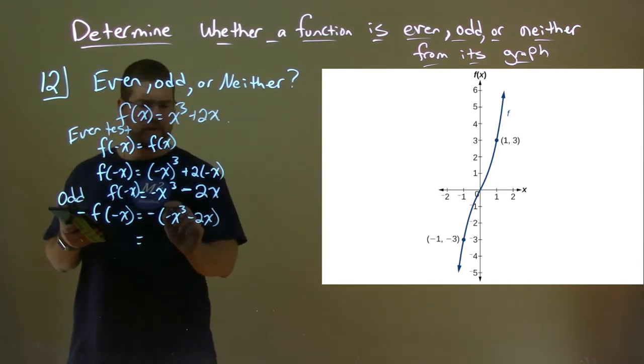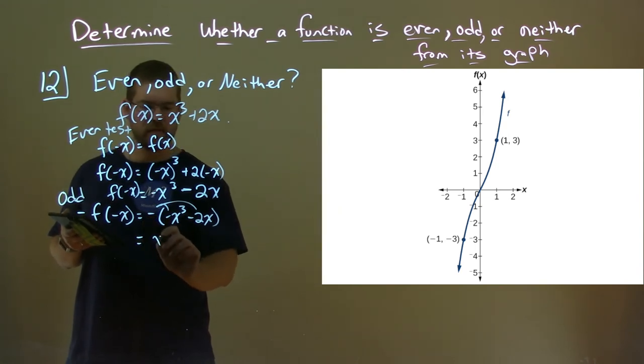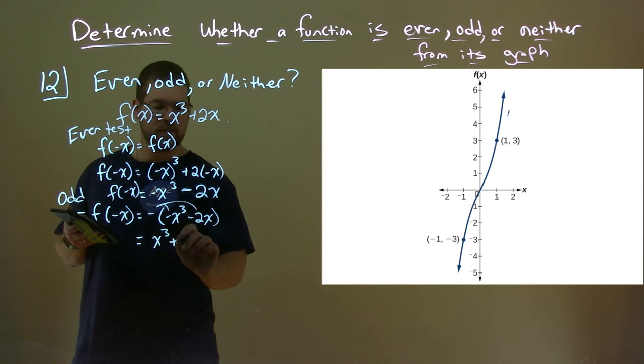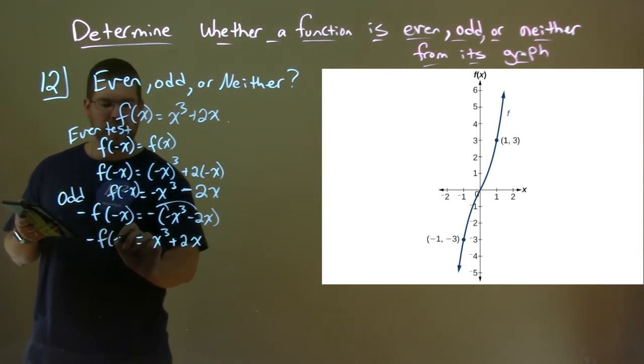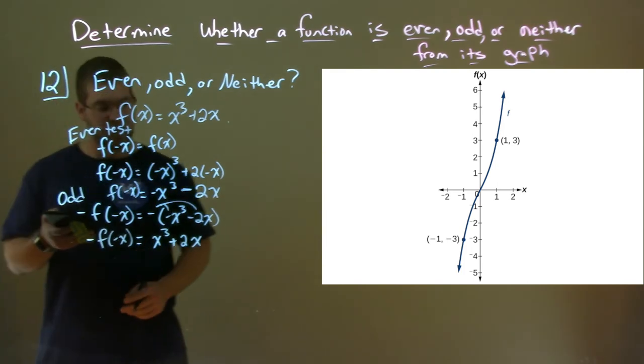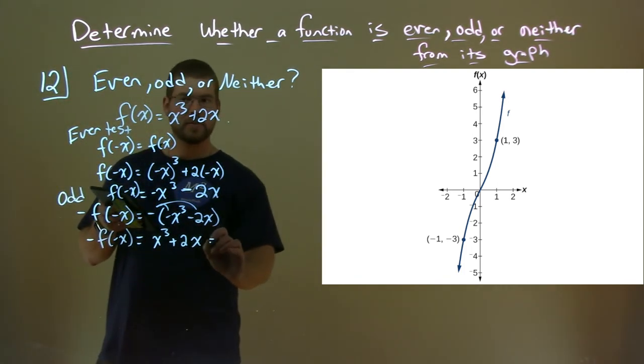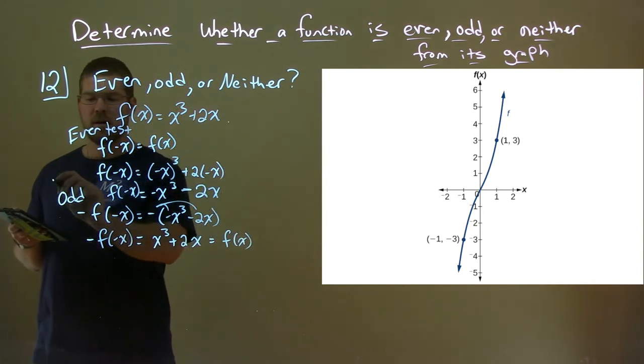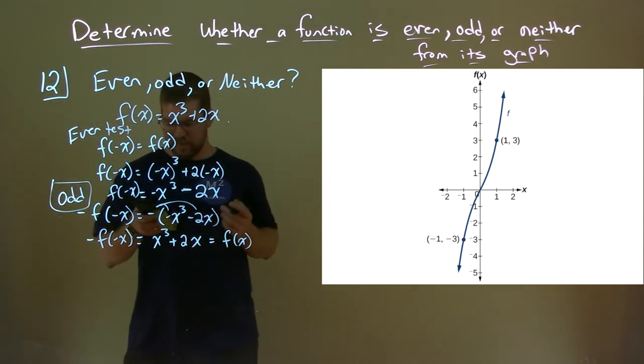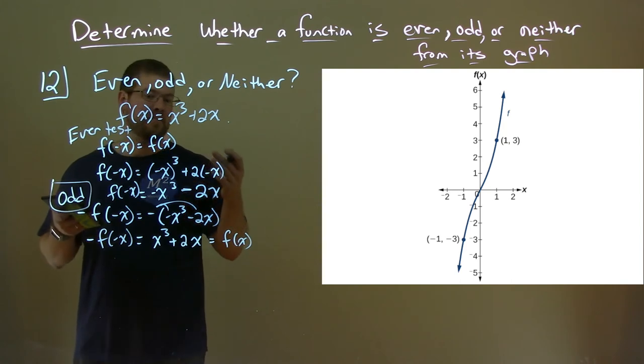Distribute the minus sign to both parts: negative negative x³ becomes positive x³, and negative negative 2x becomes plus 2x. So -f(-x) = x³ + 2x, which equals f(x) from the beginning. This graph is an odd function.